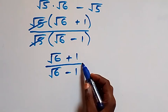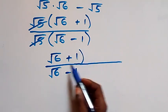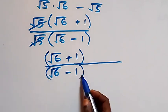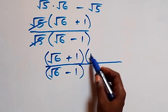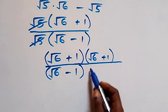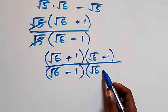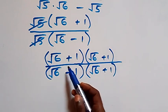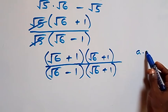Next, we rationalize this expression by multiplying both the numerator and the denominator by the conjugate of the denominator, which is root six plus one.